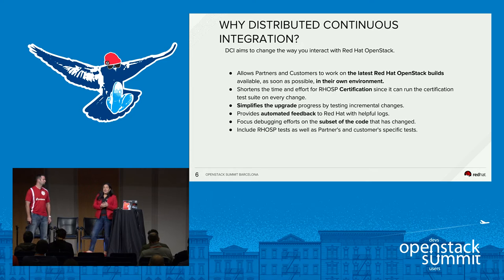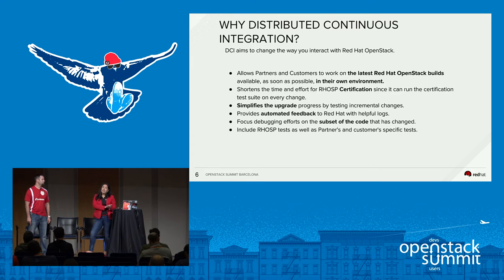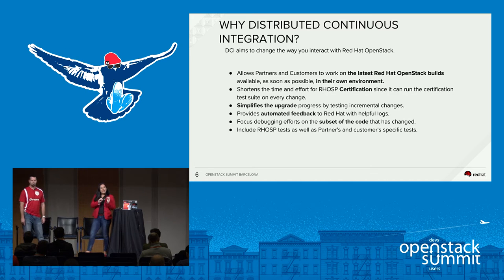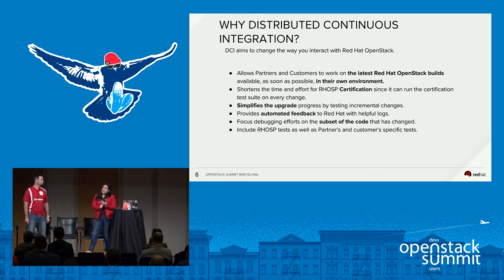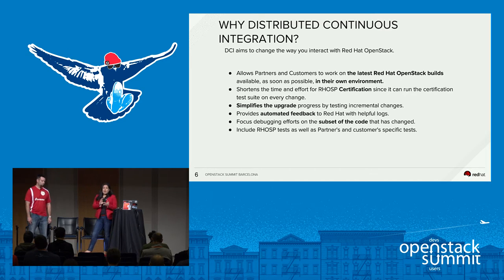Before DCI, conversations were like: did you deploy it? Did it work? How did you test it? Where did you see the fault? Can you help me report a bug? DCI elevates that discussion to: here are the logs, this is my DCI deployment, and this is where it failed. So we really elevate the conversation to direct troubleshooting and not fact-finding. Latest OpenStack builds get shipped over to our partner and customer sites, where they test in their own environment — which we have no control over.